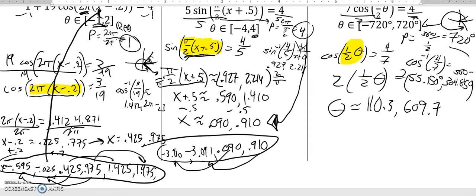So if I added 720s to these, I'd be past that top boundary, so I don't need to worry about that end. But I do, I'm going to subtract the 720. So 609.7 minus 720 is negative 110.3. 110.3 minus 720 is negative 609.7.